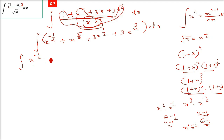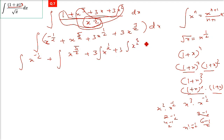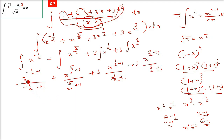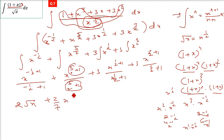Now separate them out and integrate each term. Using the formula x raised n plus 1 by n plus 1: for x raised negative half, negative half plus 1 gives half; for x raised 5 by 2, adding 1 gives 7 by 2, and 7 by 2 goes up as 2 by 7, giving x raised 7 by 2; for x raised half, half plus 1 is 3 by 2.